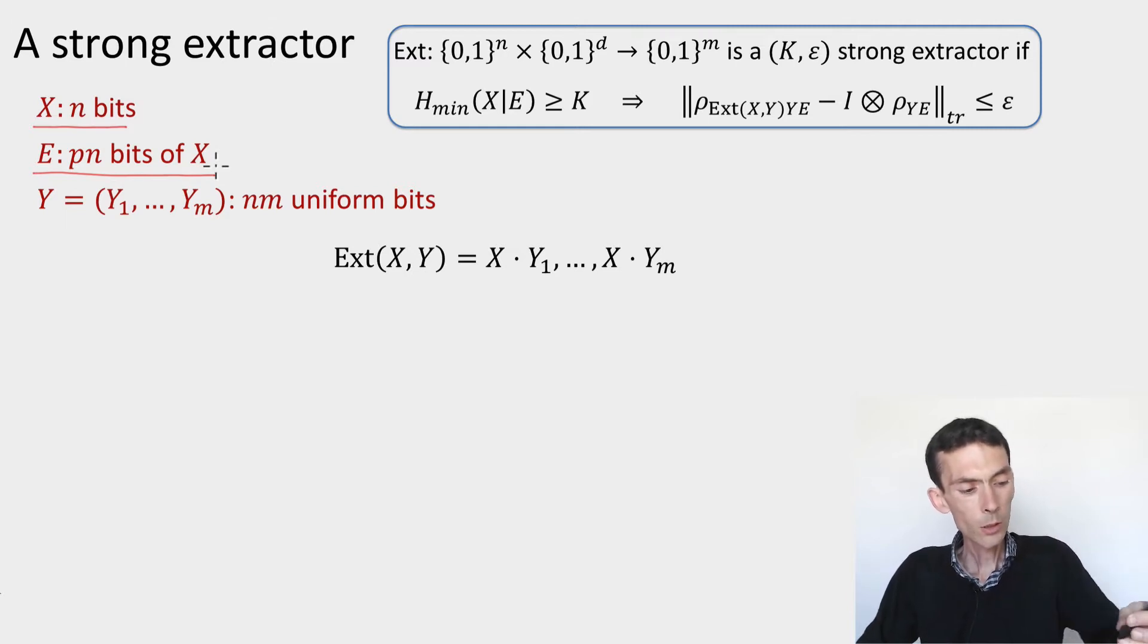In particular, under this condition, you can evaluate the min entropy of x conditioned on e, and you can see that in this case it's going to be 1 minus p times n. So that's the number of free bits that we have left.